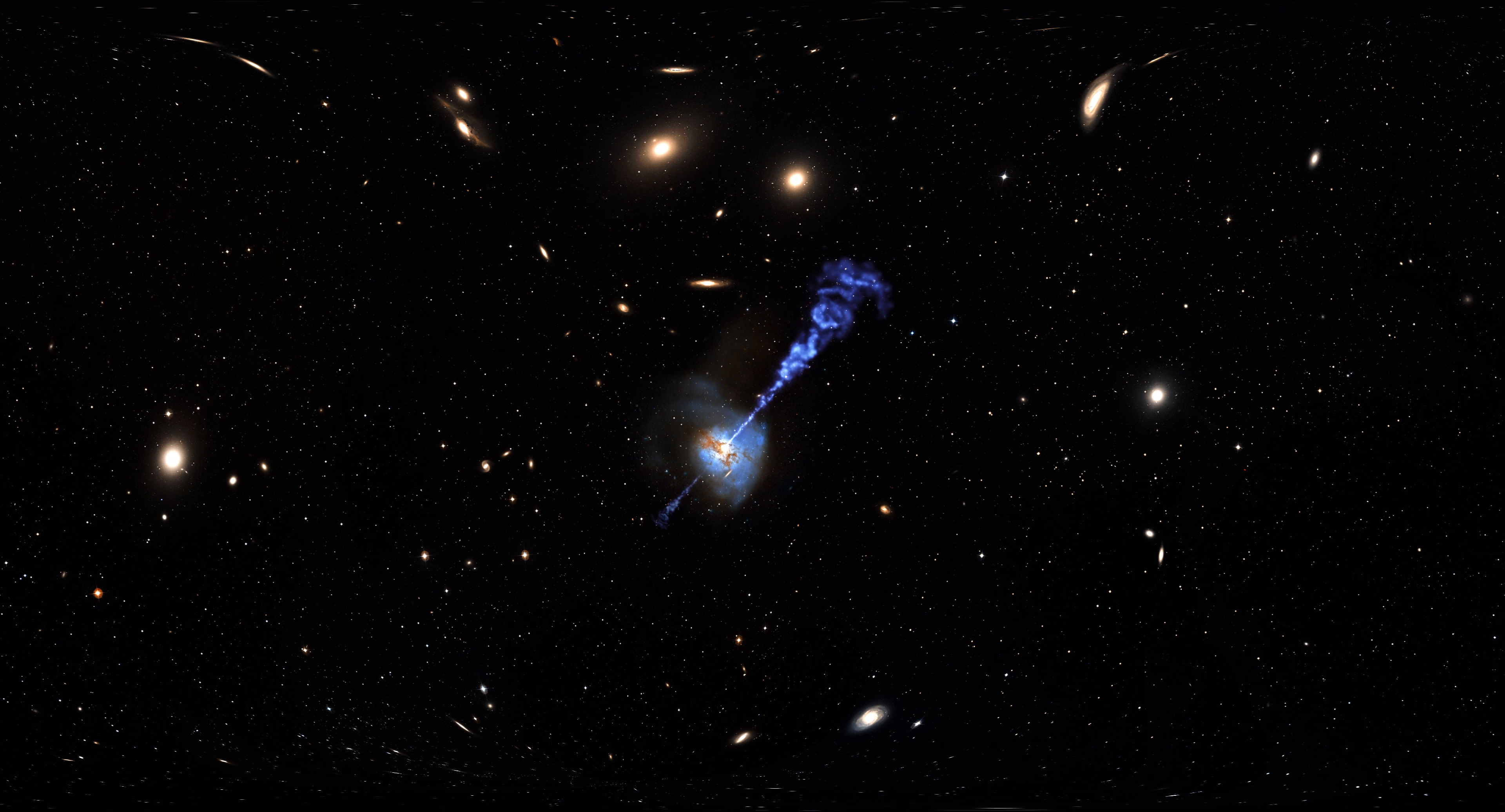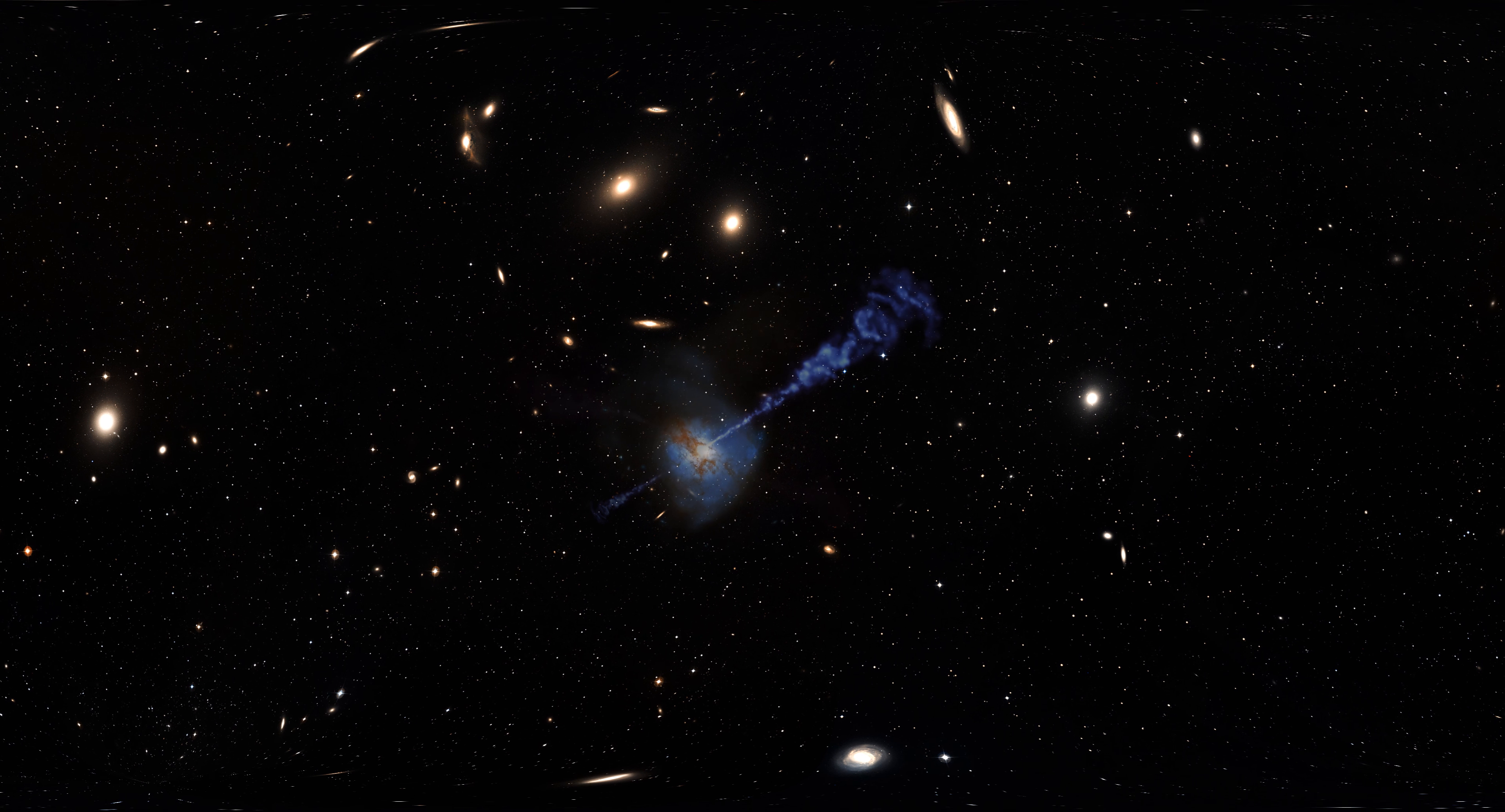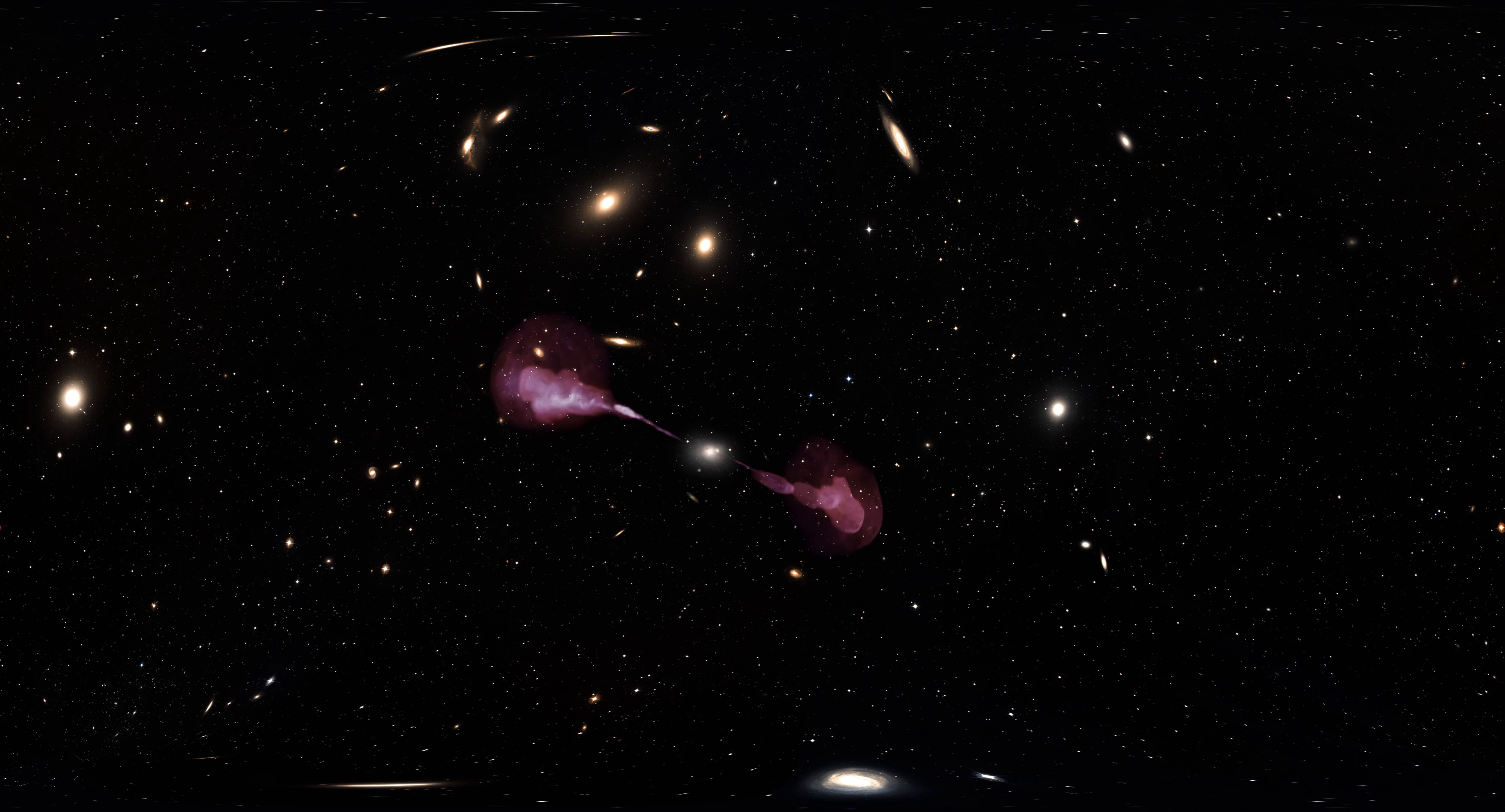We also study in detail galaxies that emit huge amounts of energy from their nuclei and are known as active galactic nuclei, radio galaxies, quasars and blazers. These galaxies have massive black holes in their center, with masses a million or even a billion times the mass of our sun, and accrete huge amounts of matter. They also have jets that extend out into the intergalactic medium.